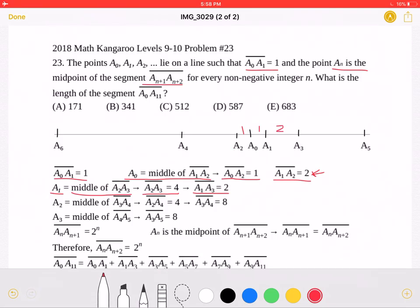Next, let's go to a2, which is the middle of segment a3a4. We know that segment a2a4 must be equal to 4 because again a2 is the midpoint.